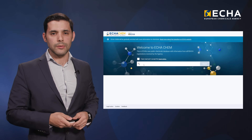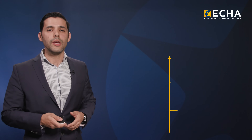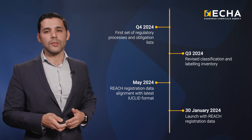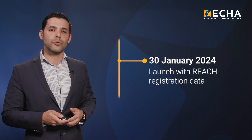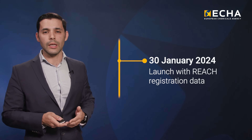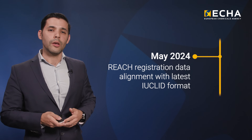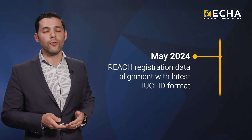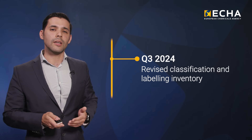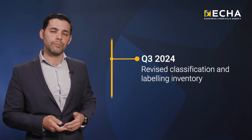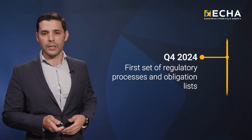ECHA Chem is our new Public Chemicals Database. We are launching it gradually as new components are available. Here you can see when the next releases are foreseen: 30 January 2024, launch with rich registration data submitted by industry in IUCLID format; May 2024, rich registration data alignment with new IUCLID format; Q3 2024, revised classification and labeling inventory; Q4 2024, first set of regulatory processes and obligations lists.